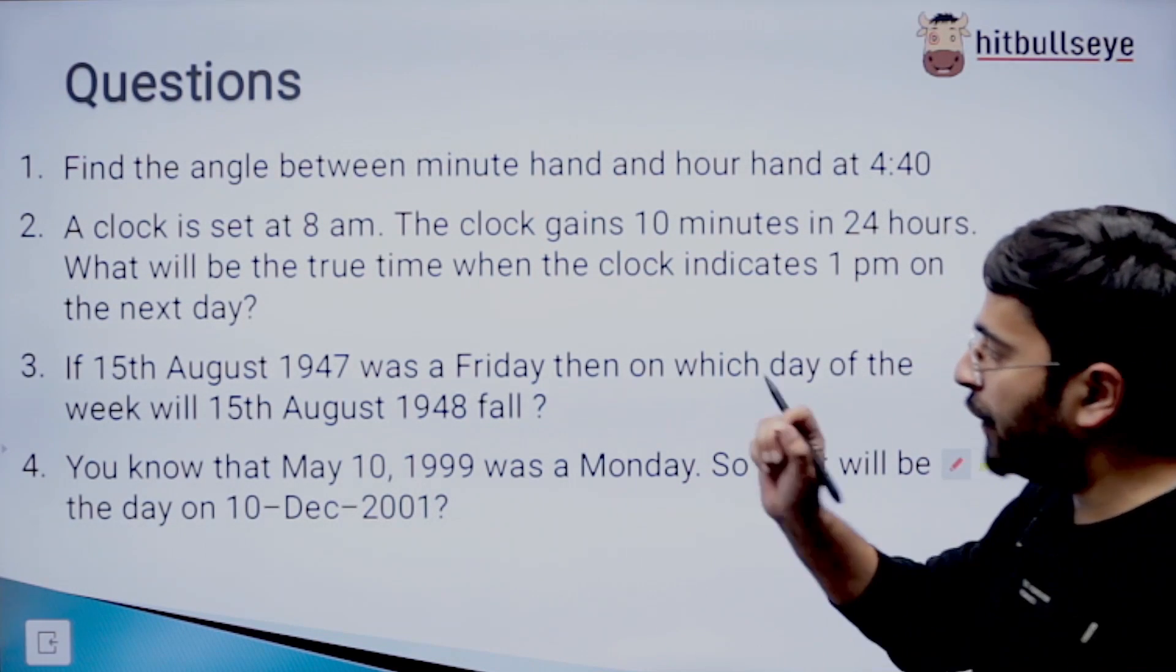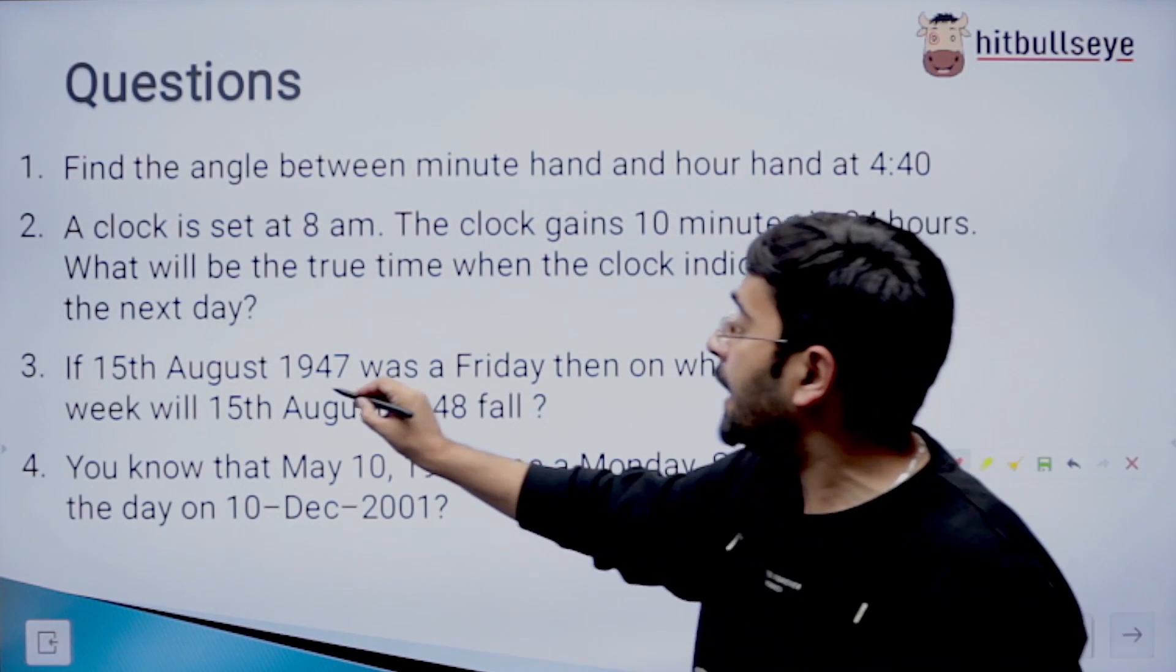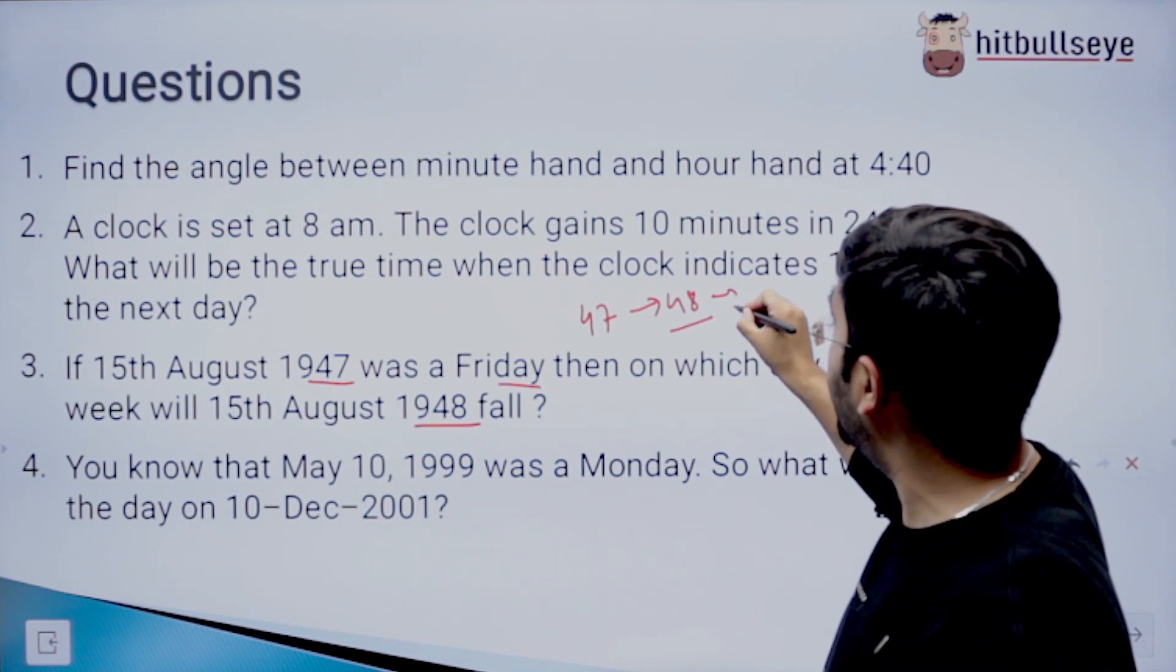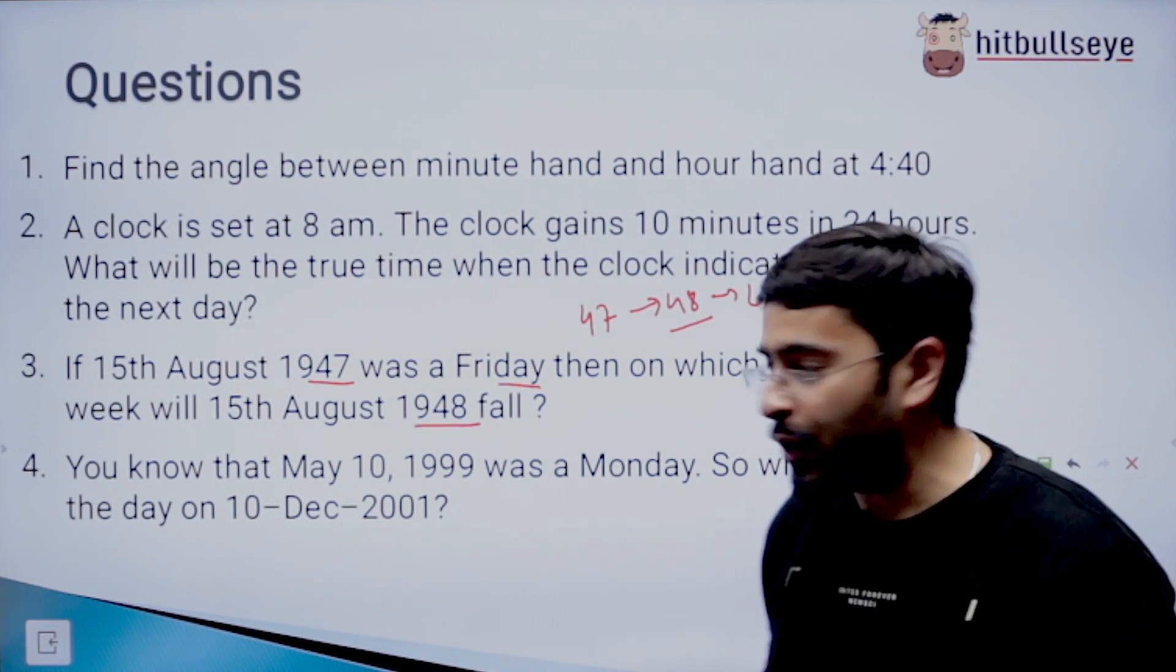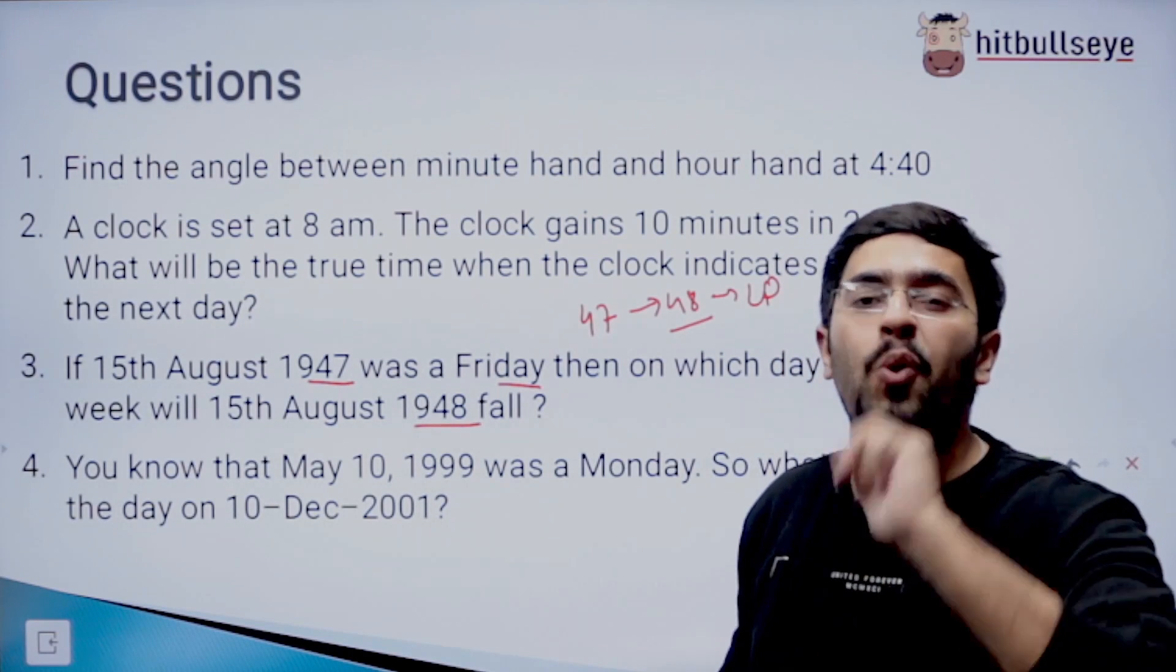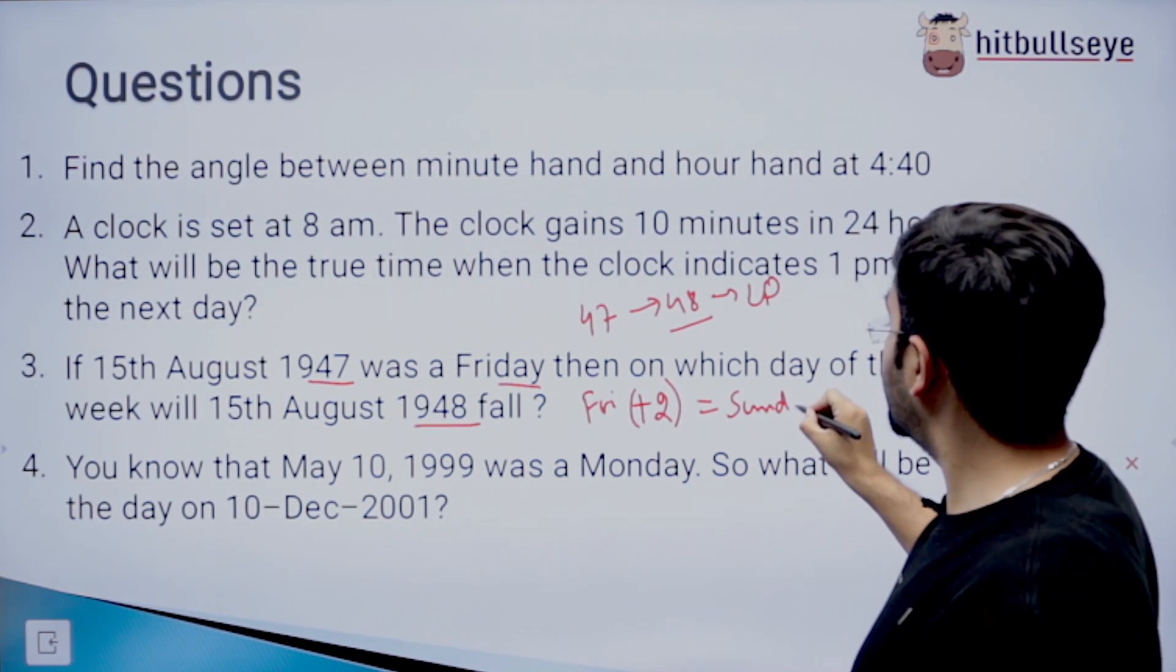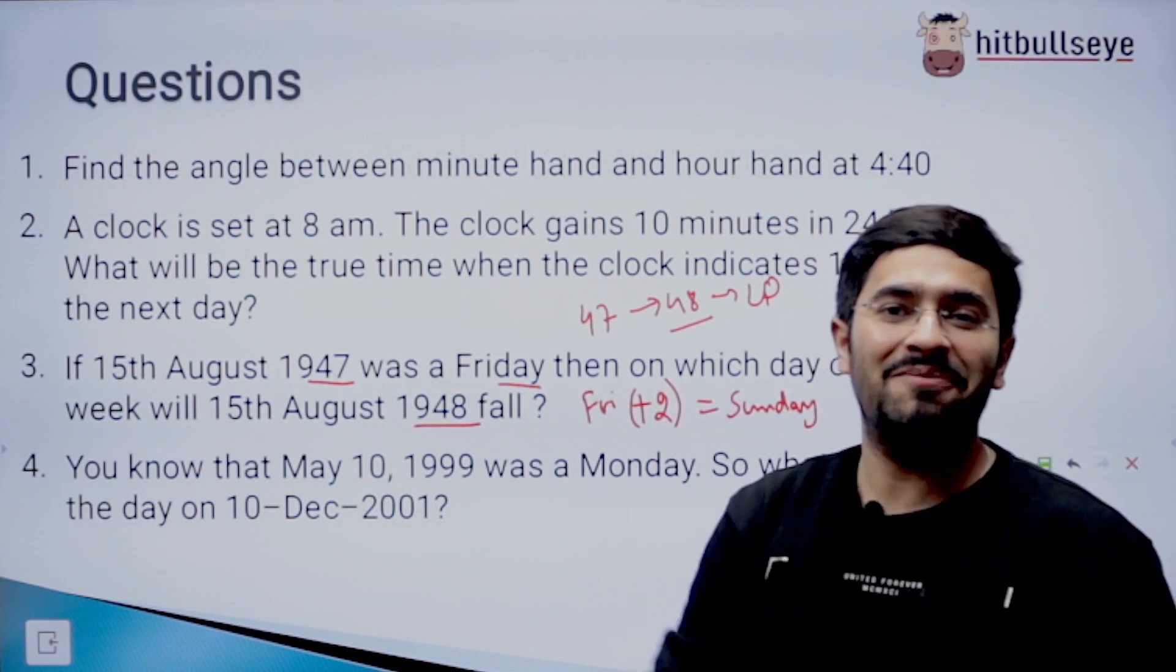Now let's move on to the next question. If 15th of August 1947 was a Friday, then on which day of the week will 15th of August 1948 fall? Meaning, if it was 1947 Friday, then immediately next year, which day will be 48? Now, when we see from 47 to 48, we will find that 48 is a leap year. Why? Because when you divide 48 by 4, the remainder comes out to be 0. So when the year changes to immediately next, you have to remember that in a leap year there are two odd days. So you have to add two odd days. Friday plus two odd days gives out to be Sunday. Then on which day of the week will 15th of August 1948 fall? The answer is going to be Sunday.